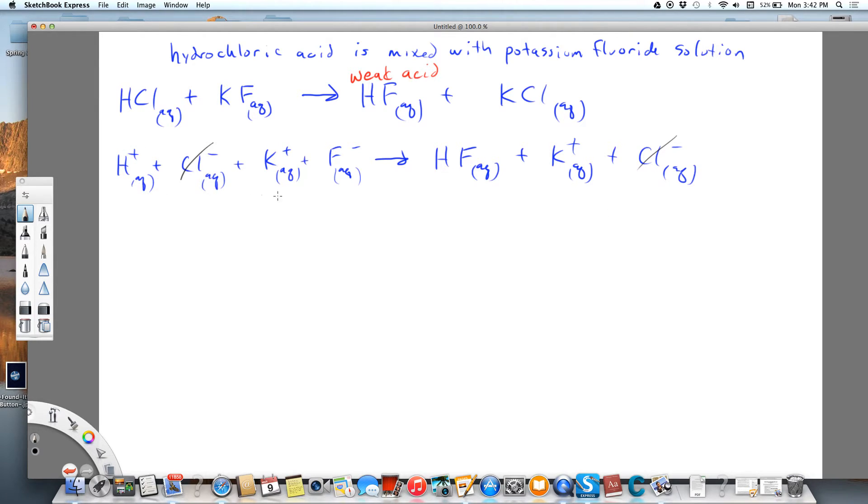Hydrogen is aqueous on each side, but you can see it went from being an ion to being a molecule, so it changes and we're going to keep that. Potassium stays the same, it's an ion on both sides. Does the H change? Yes, it goes from ion to molecule. Does the fluoride change? Yes, it goes from ion to molecules. That's our weak acid.